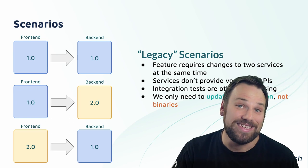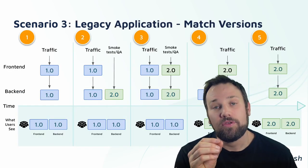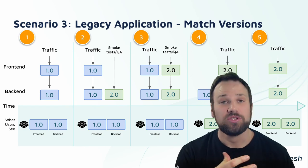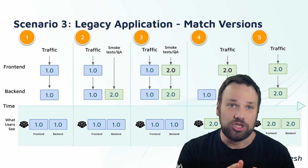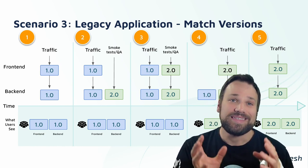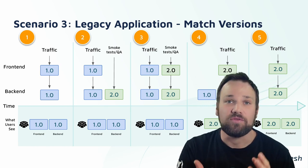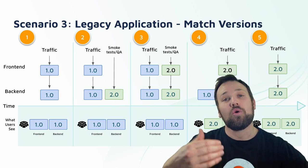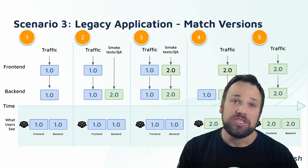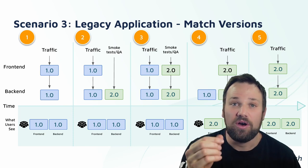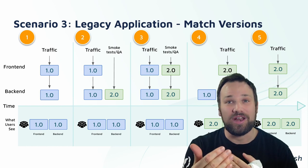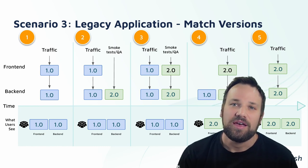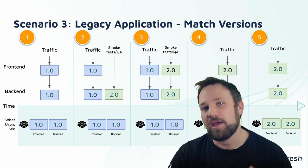The scenario we're going to cover with a demo is using a legacy application where we want to match versions. Step one: all traffic gets version 1 of the front-end and version 1 of the back-end. Step two: we deploy new backend version 2 and run tests. Step three: instead of exposing that to users, we orchestrate these rollouts together — we deploy version 2.0 of the front-end, which we can test integrated. Step four: we switch all traffic over and scale down previous versions. Step five: everything is deployed and all old versions are gone.